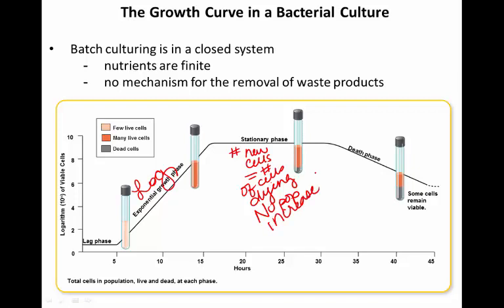Why would cells suddenly not reproduce as quickly, or have larger numbers begin to die off? It's because this is a closed tube. The number of nutrients is finite, there's only so much oxygen, only so many nutrients, and there's no way to get rid of waste products — the waste products will eventually start to slowly poison the organisms. The stationary phase is maintained for a brief period, and then eventually there are no nutrients left and massive amounts of waste, and organisms start to enter the death or decline phase, where the number of cells being produced is much smaller than the number dying, and the total population begins to decrease.